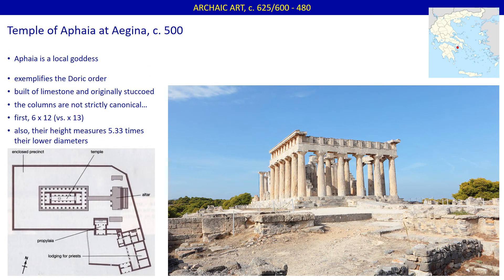A great example of a Doric temple in the Aegean is the Temple of Aphaia at Aegina, erected around 500 BC. Aegina is an island close to Athens, and Aphaia was a local goddess. The temple is built of limestone and originally had a stucco finish. You'll note from the columns that the temple is Doric, but it's not strictly canonical, since the columns number six across the front and twelve down the side rather than thirteen. Also, their height measures 5.33 times their lower diameters, instead of the canonical seven diameters.